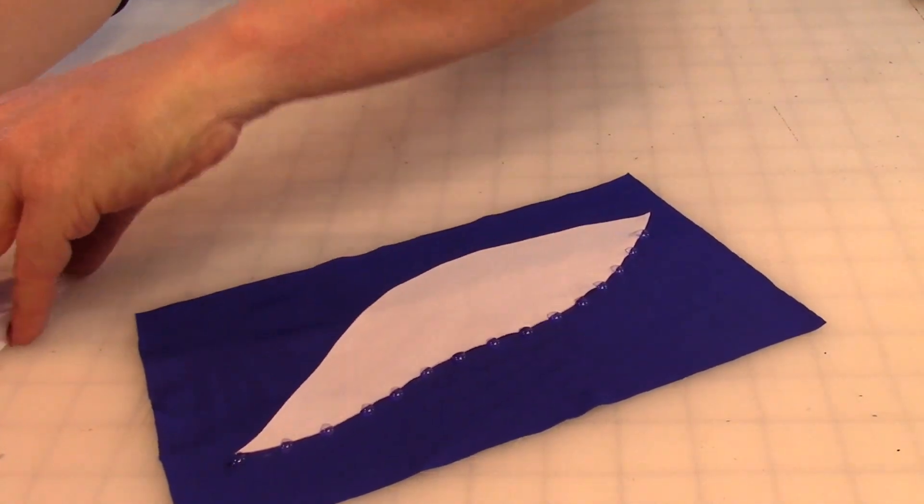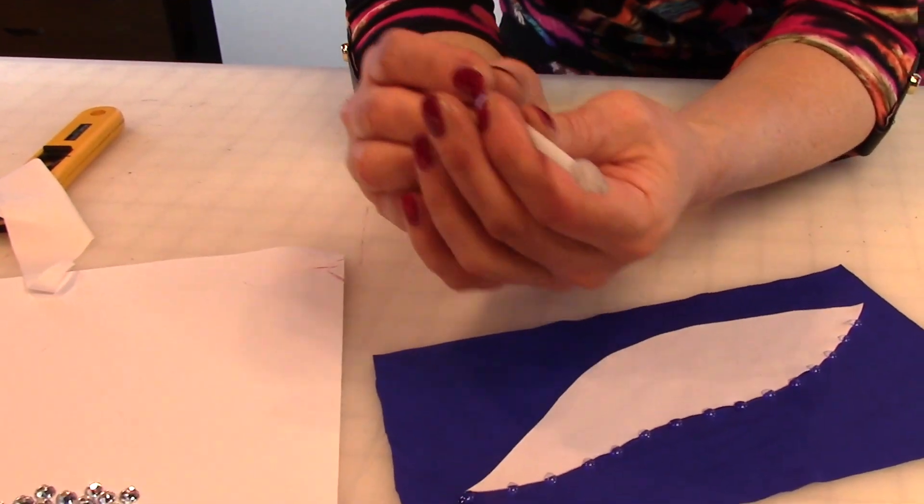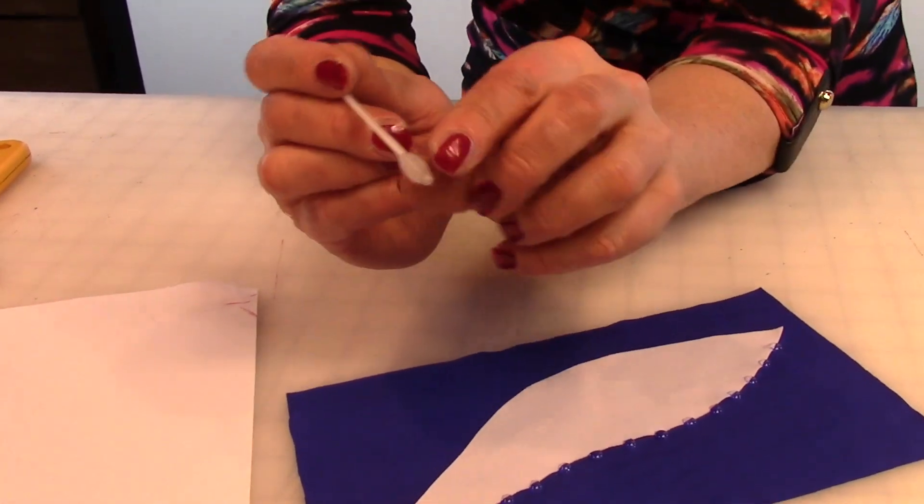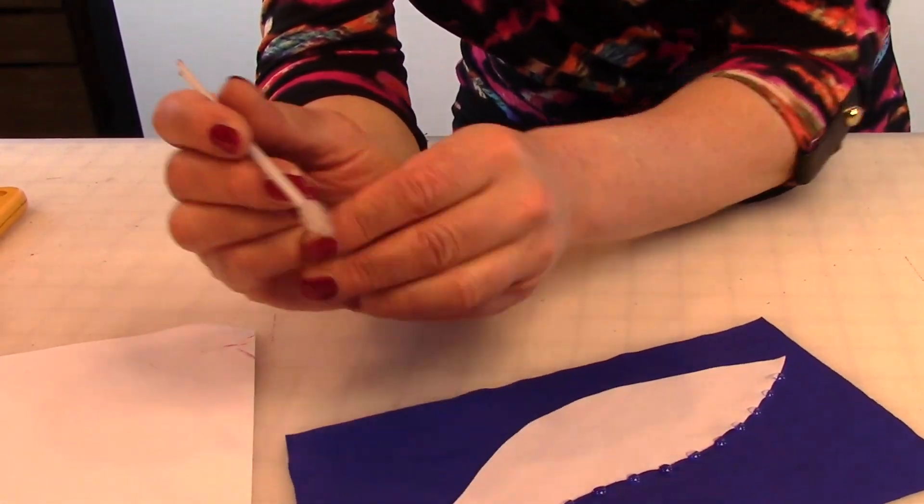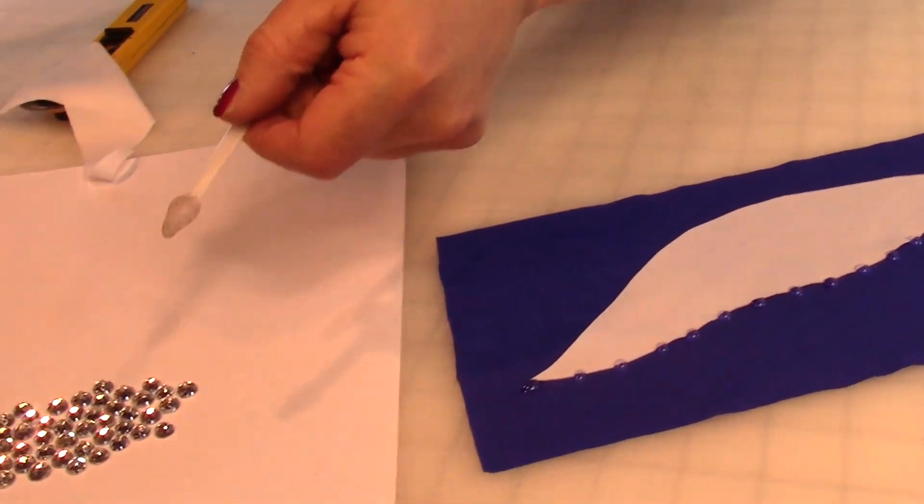Another thing I wanted to show you today is this little stoning tool that I found at the craft store. It's got a little ball of wax on the end of it and it makes it really easy to pick up the stones.